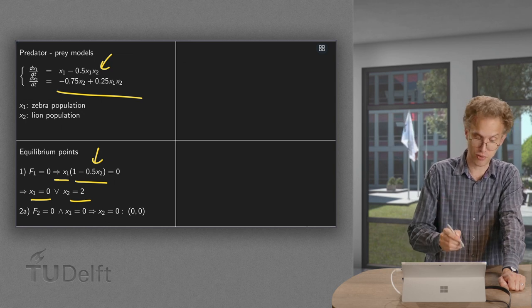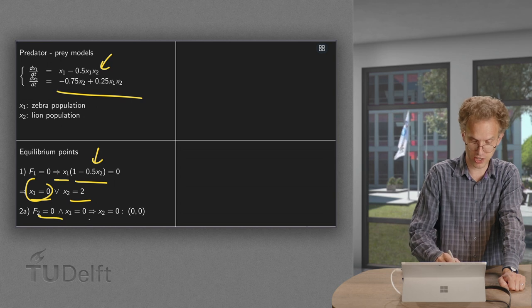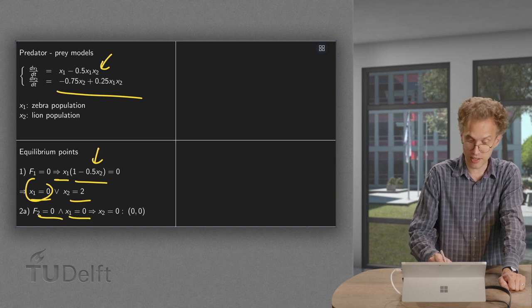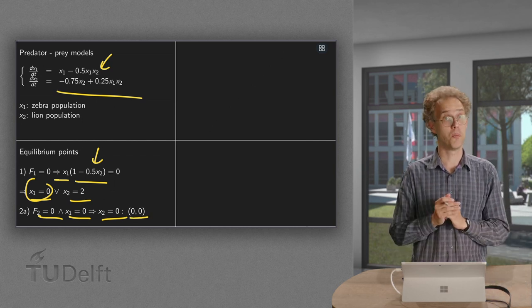And then we set f2 to 0. Okay, f2 is 0 and we pick our first solution. So f2 equals 0 and x1 equals 0. That only gives x2 equals 0, so the origin as a solution. So both extinct.